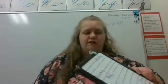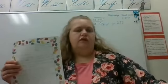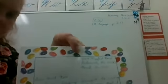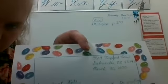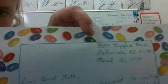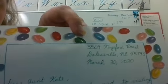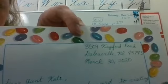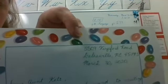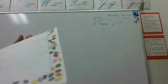So I wrote this letter — it's just a copy of a sample. The address says 3509 Kingsford Road, Dalesville, Nebraska — NE — 54579-3, and it says March 30th, 2020. That's the heading, and that's what it should look like.